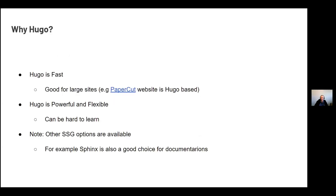Why did I choose Hugo? Hugo is fast and quite popular. The PaperCut website is Hugo-based, which is a real-life large-scale environment. The reason I personally chose Hugo is that I wanted to be compatible with our main website so our web development team can take over the developer portal if needed. Hugo is extremely powerful and flexible, which means it can be difficult to learn — I'm hoping today helps you avoid some of the early pain. There are lots of other website generators; I personally quite like Sphinx for documentation.